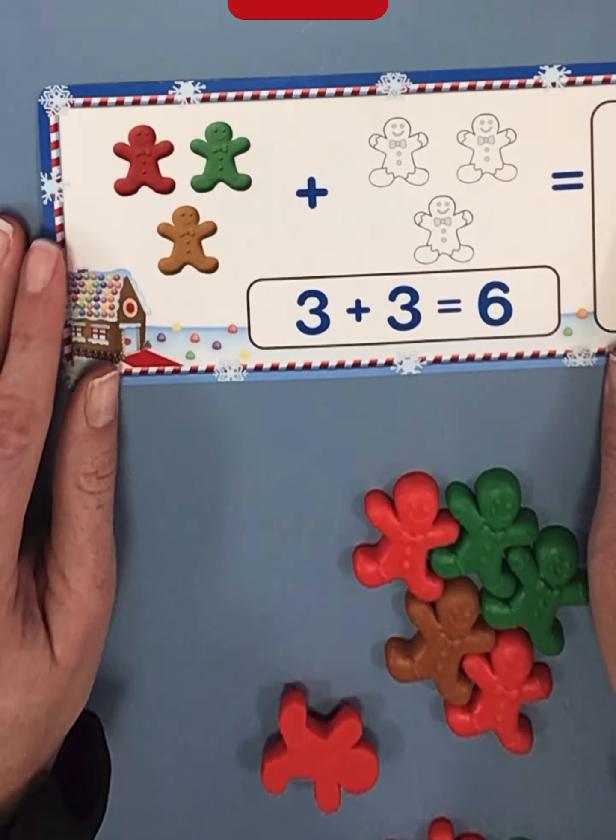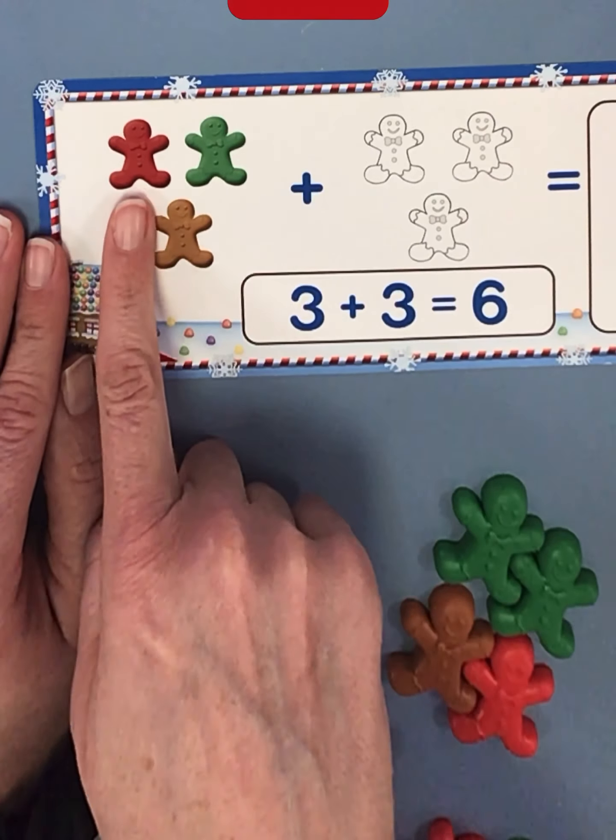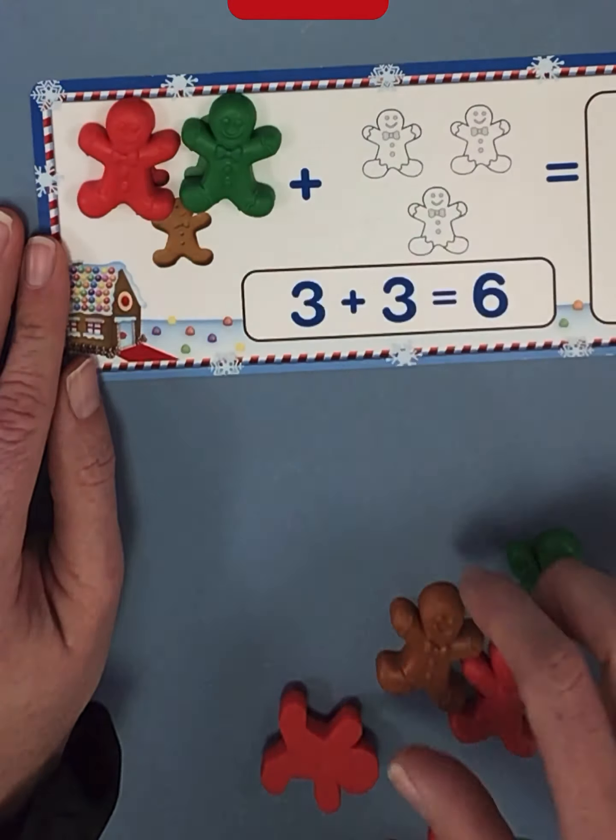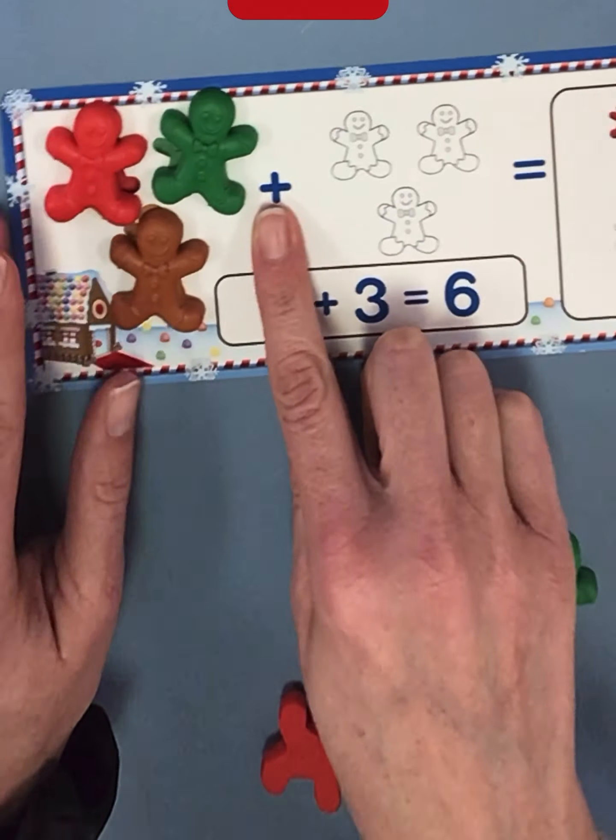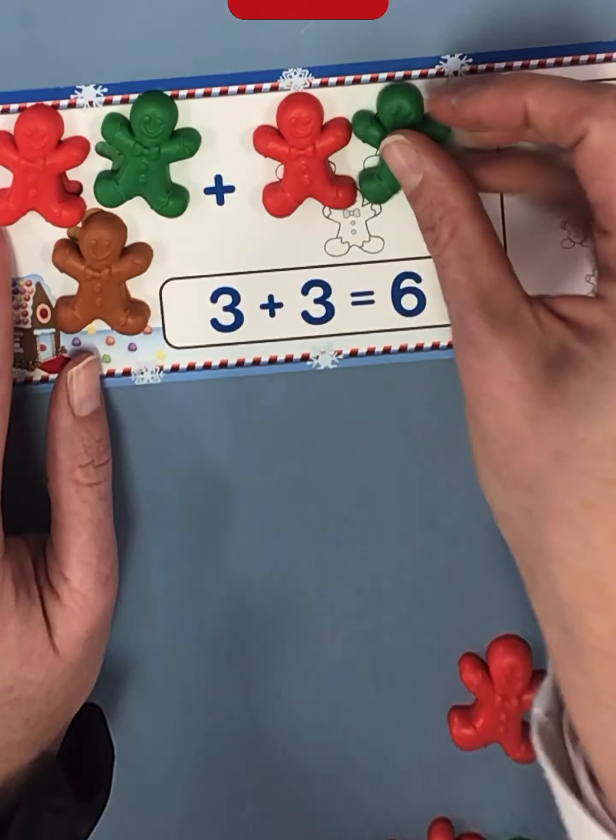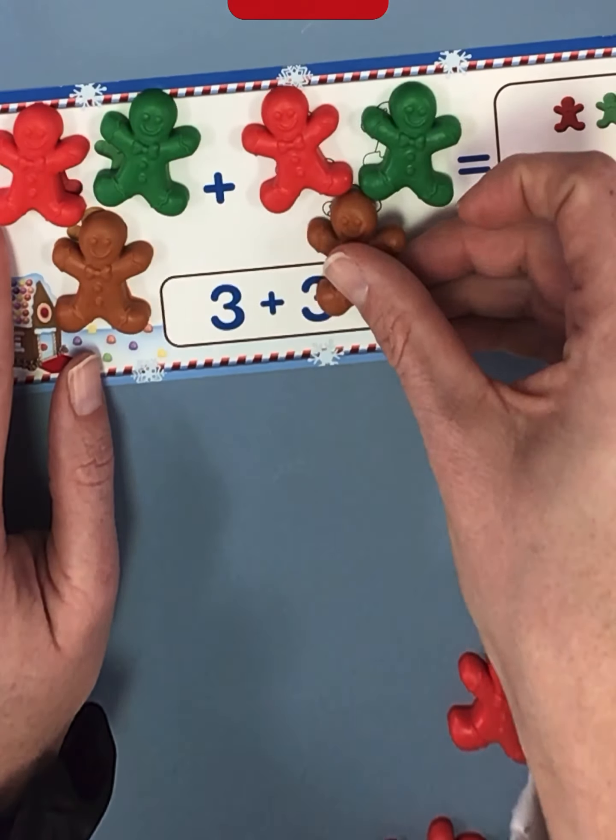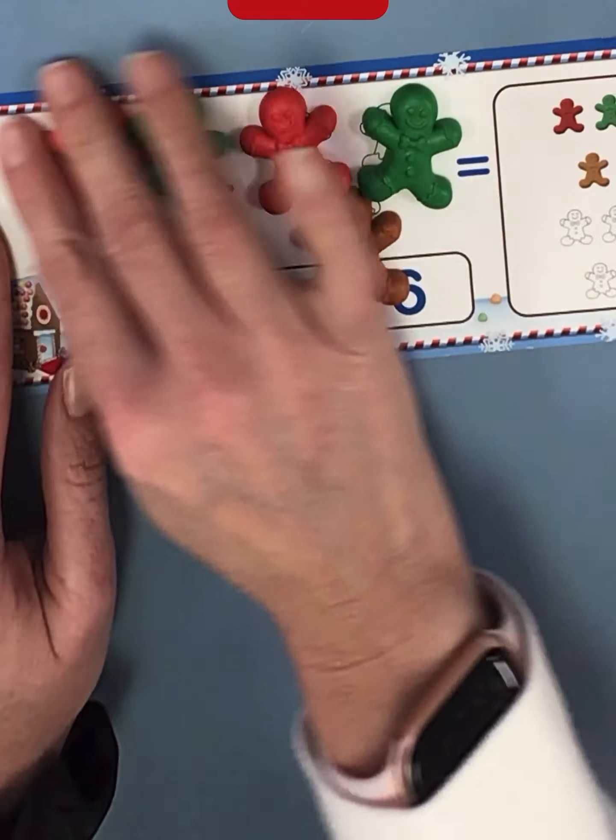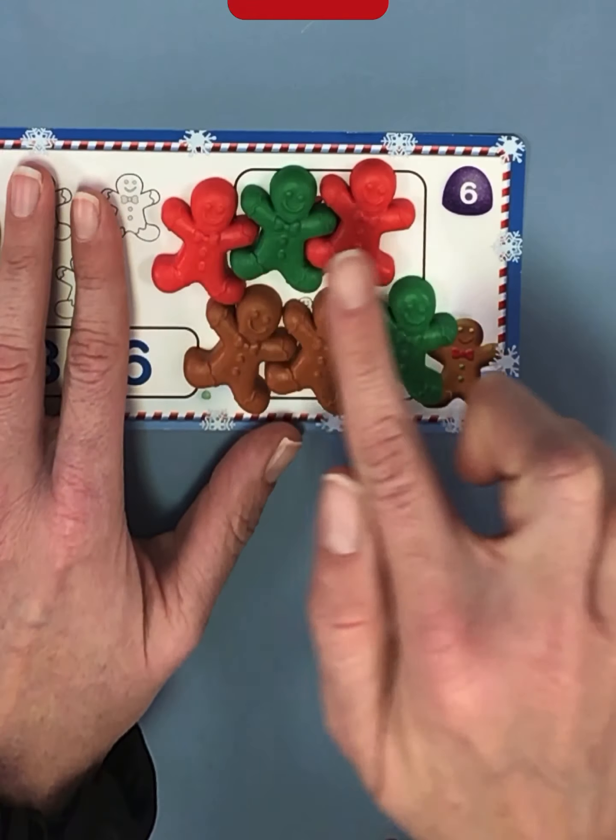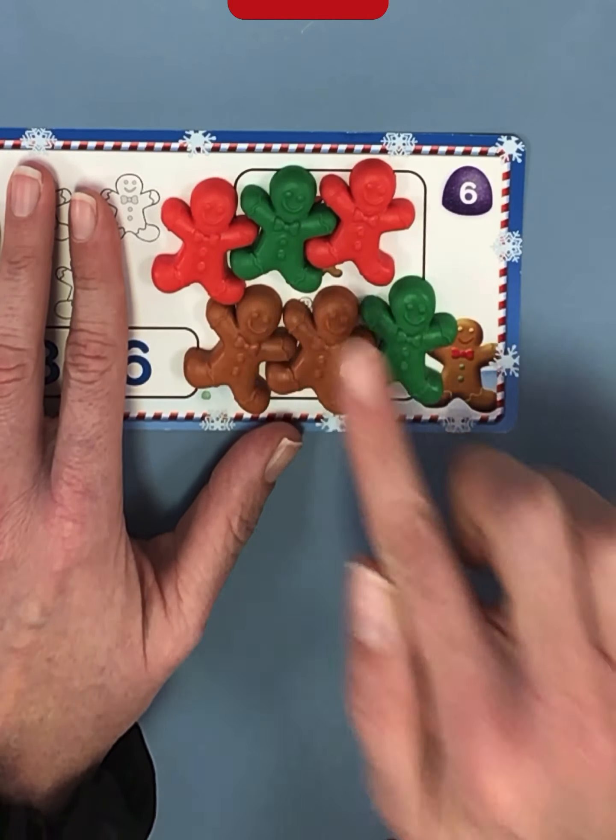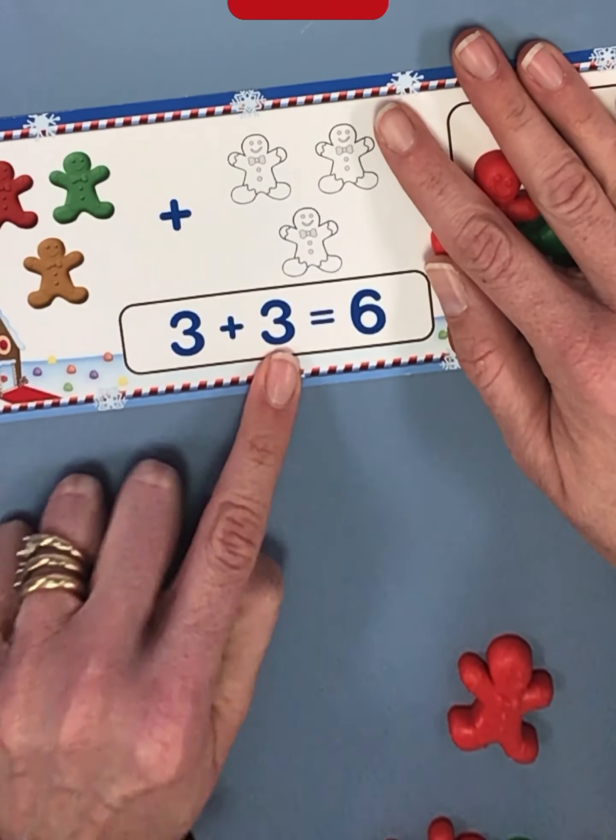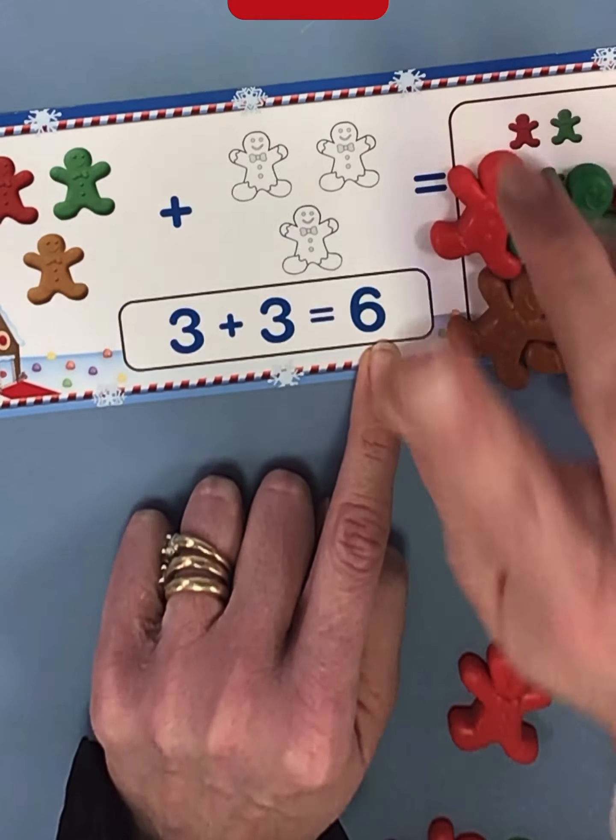Let's try one more. Last one. How many are we going to start with? One, two, three, plus one, two, three equals. One, two, three, four, five, six. Let's read our math sentence. Three plus three equals six. Good job, guys.